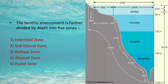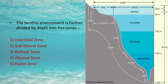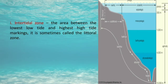The benthic environment is further divided by depth into five zones. As seen in the diagram, the first zone is the intertidal zone, also called the littoral zone. Second is the sublittoral zone. Third is the bathyal zone. Fourth is the abyssal zone. And fifth is the hadal zone.